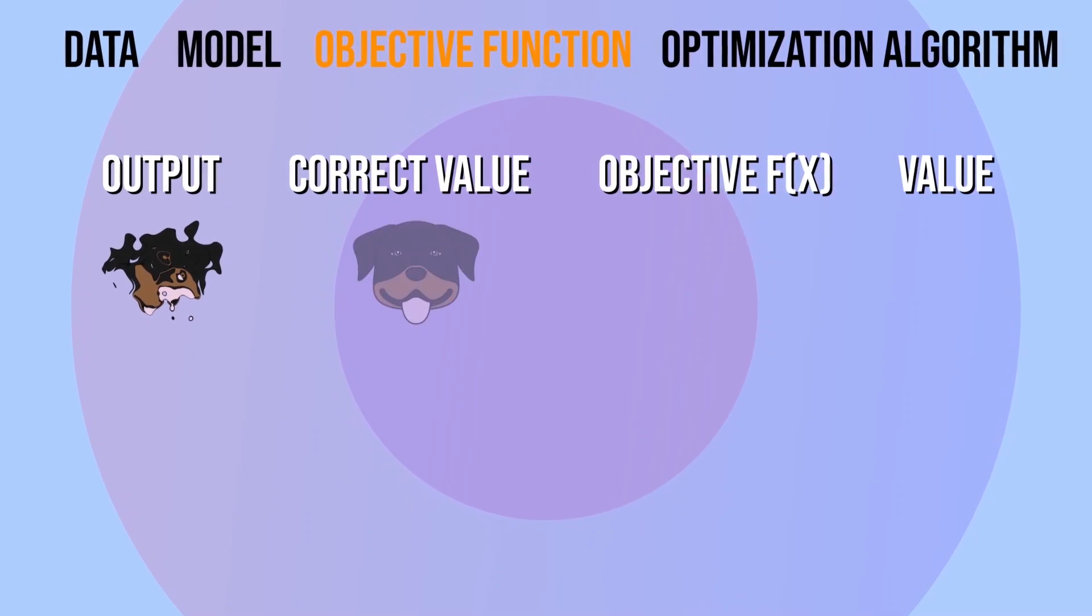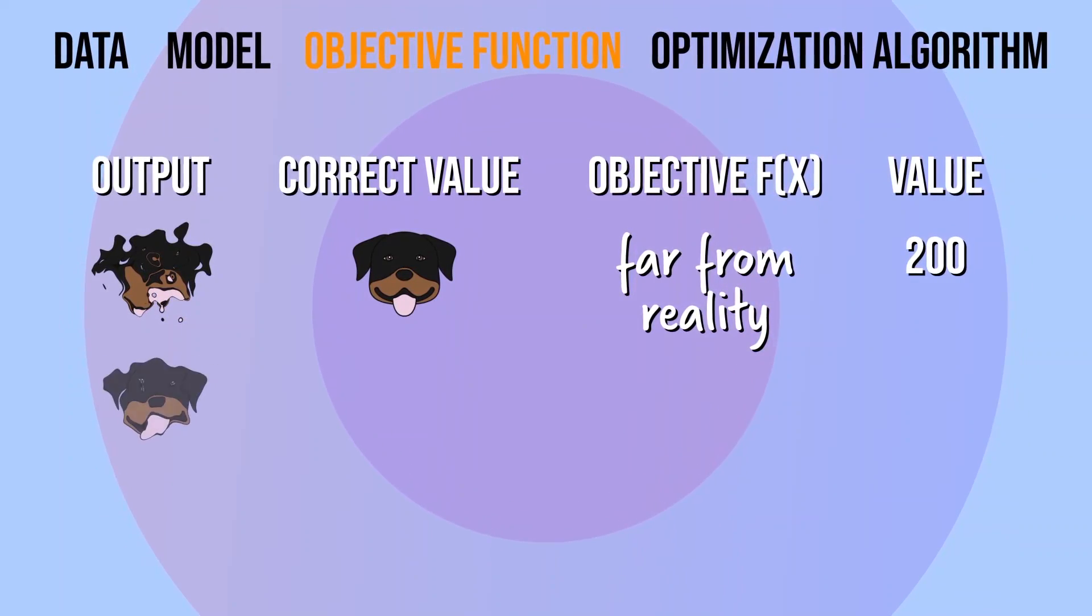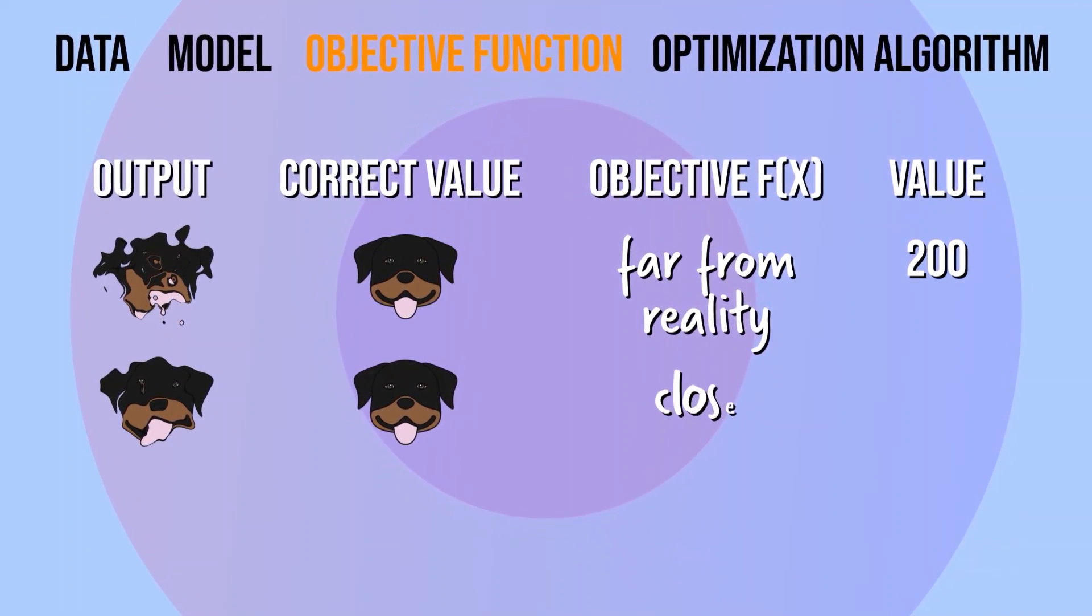The way we're actually computing that error value is by using a loss function. It quantifies how wrong we'd be if we use the model to make a prediction on X when the correct output is Y.